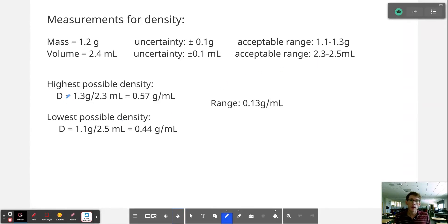Now this gives us, when we combine the values to find a density, this gives us a significant range of possibilities. So for example, if the true mass were on the high end of our uncertainty, if the true mass were 1.3 grams, and the true volume were on the low end of our uncertainty and it were actually 2.3 milliliters, then the highest probable density that we could calculate is 0.57 grams per milliliter with the appropriate number of sig figs.